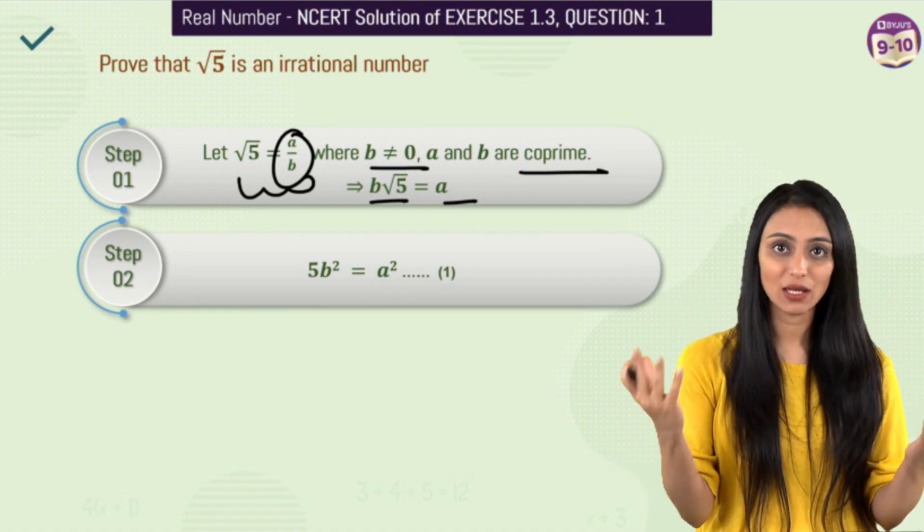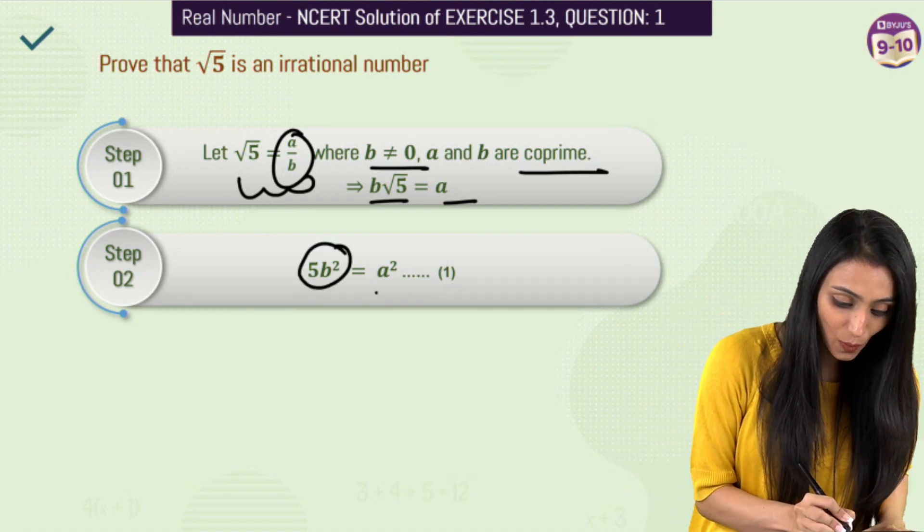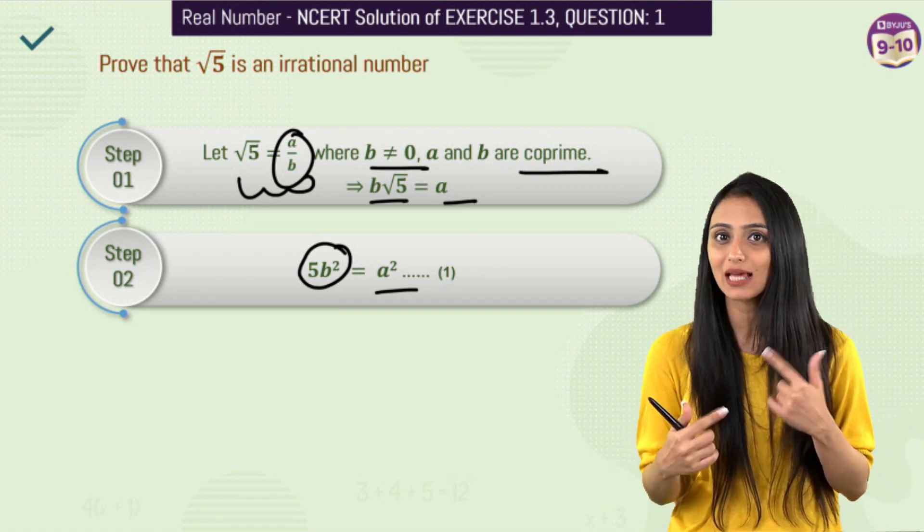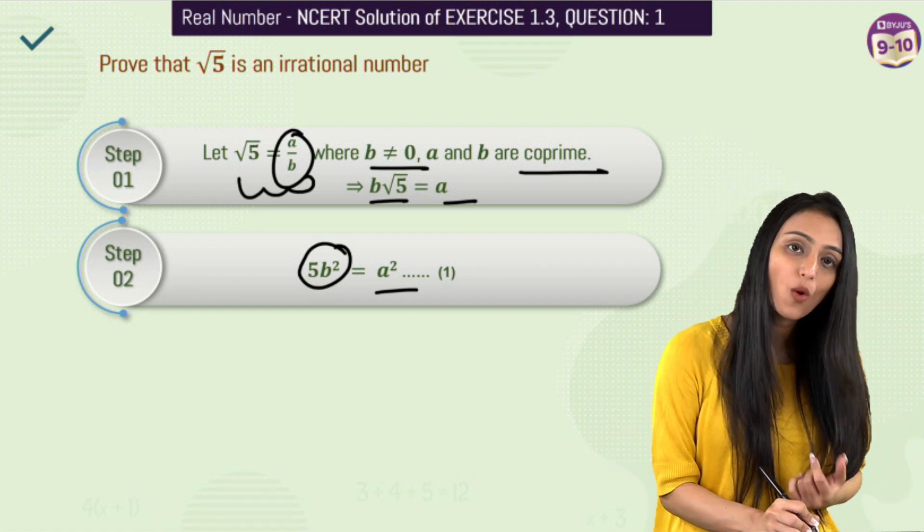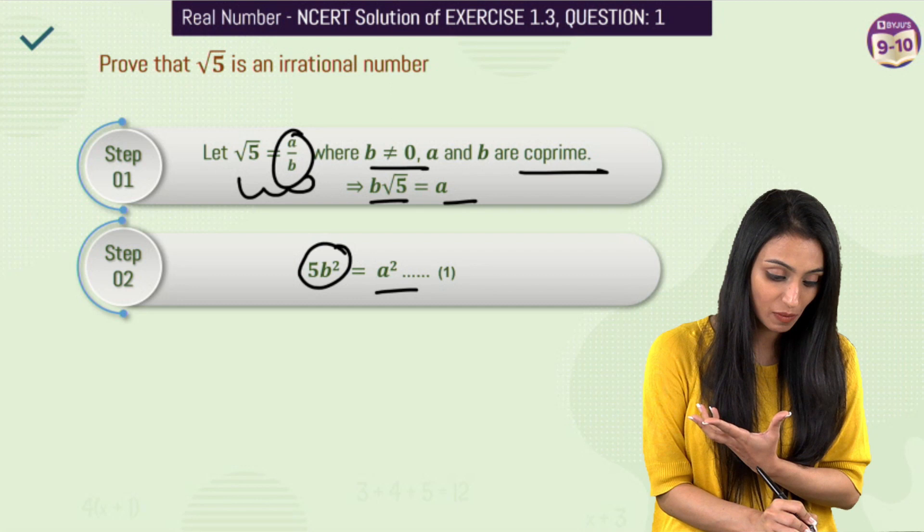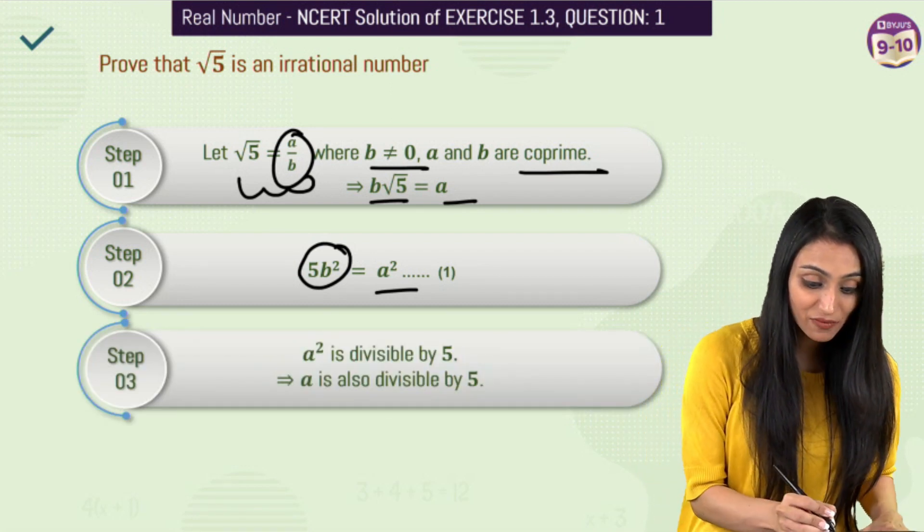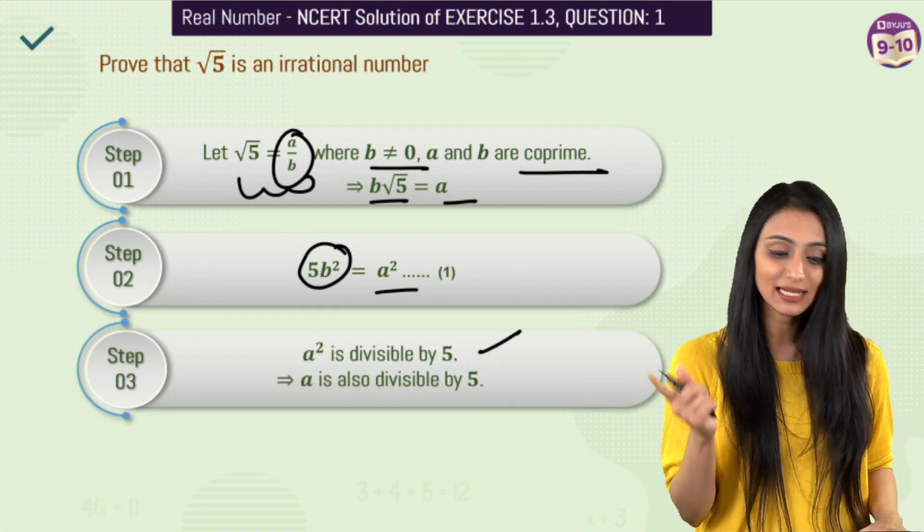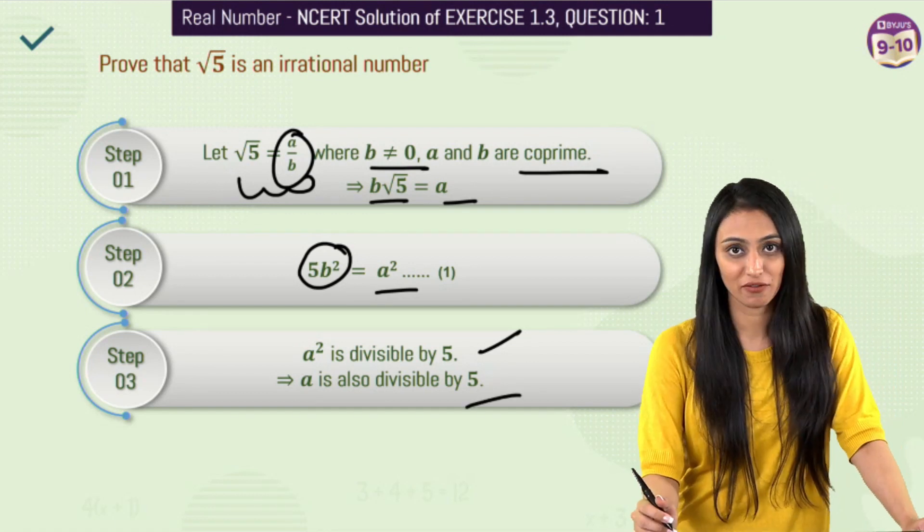Once we do squaring both sides, we get 5b square equals to a square and let's mark this as equation number 1. Now according to the fundamental theorem of arithmetic, this says that if a square is divisible by 5, this implies that a will also be divisible by 5.